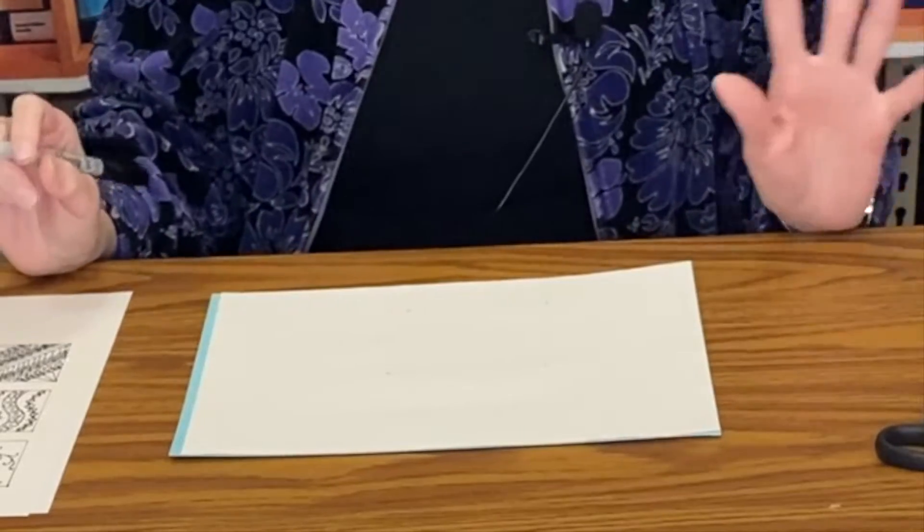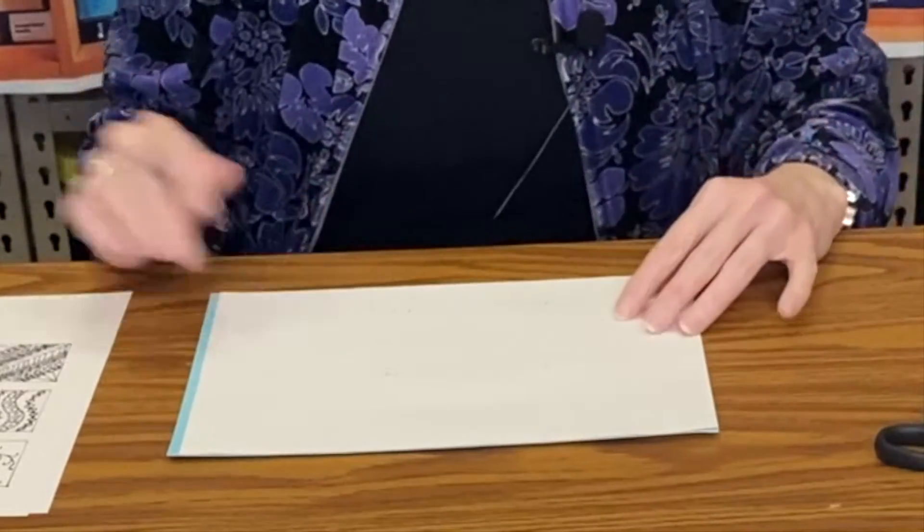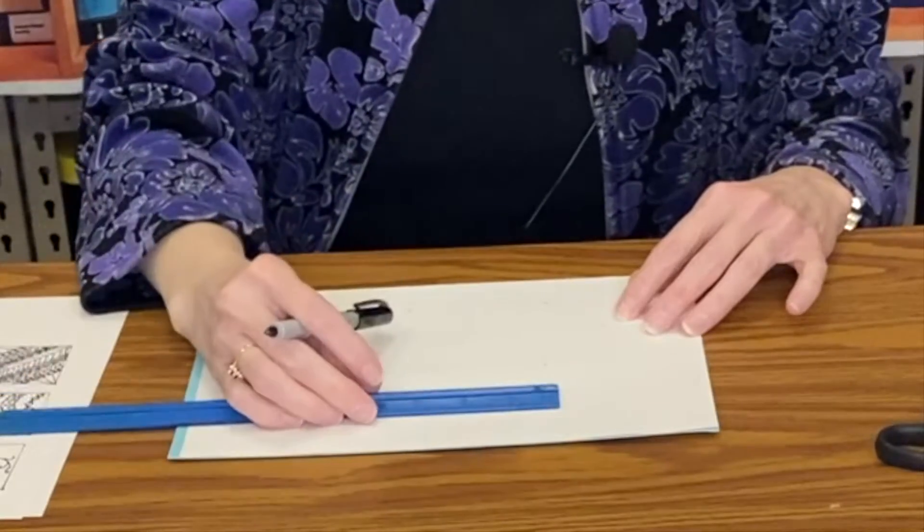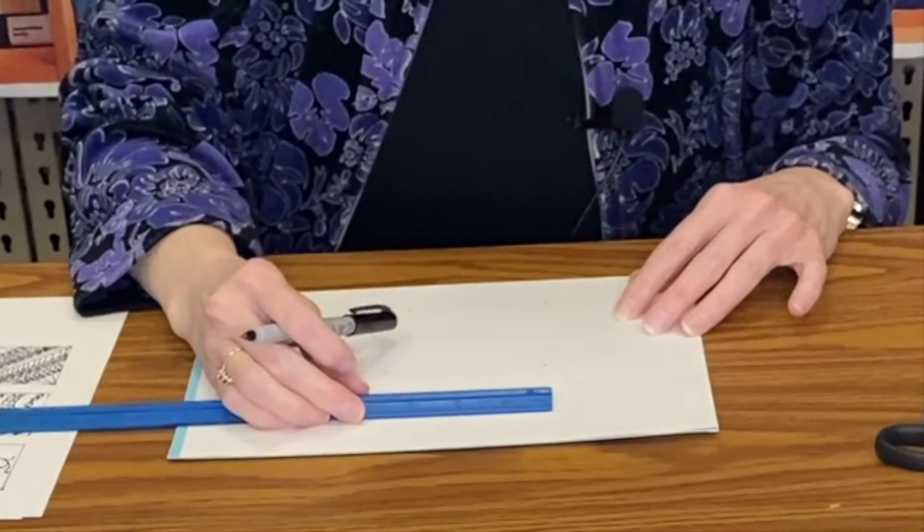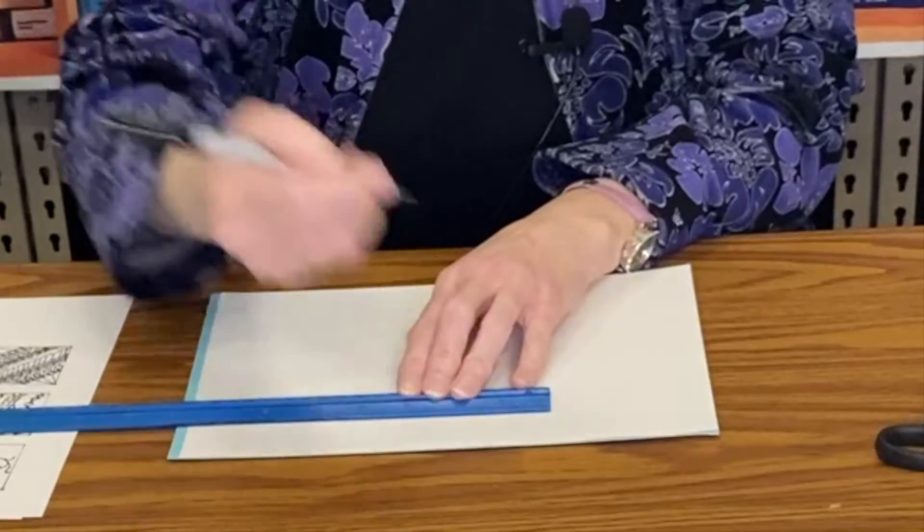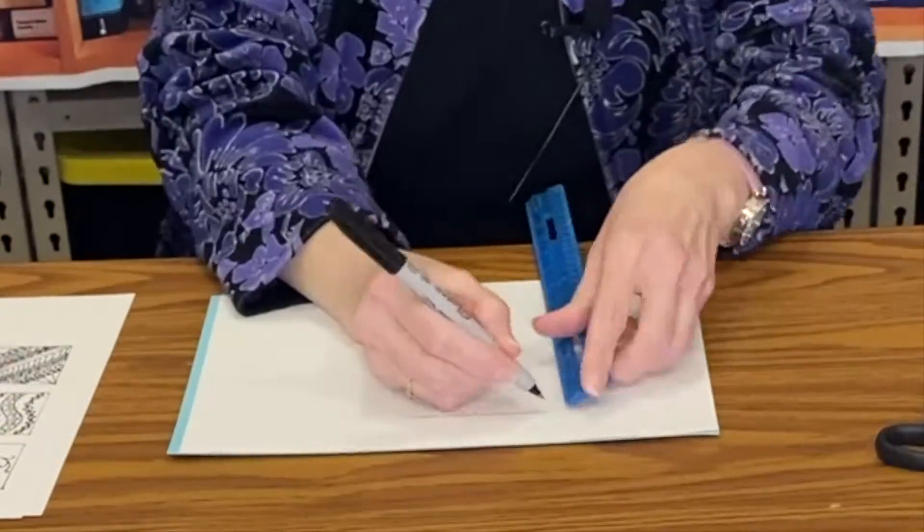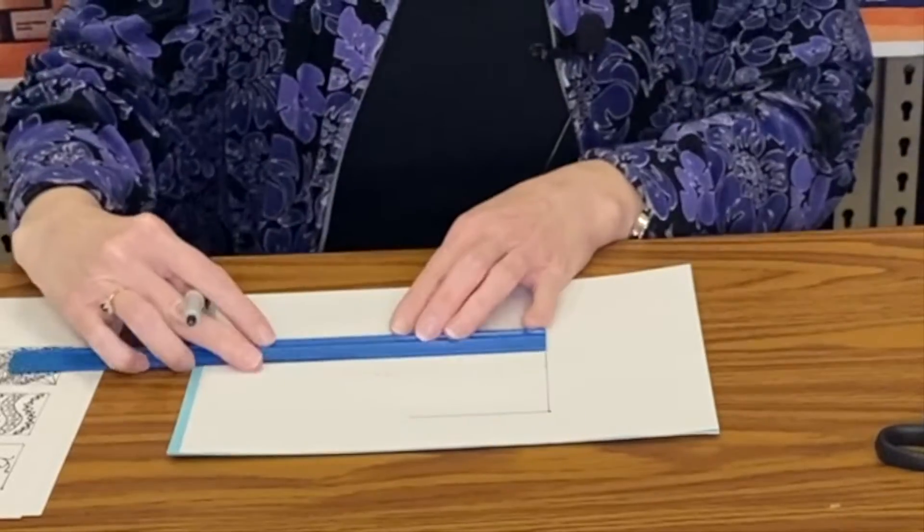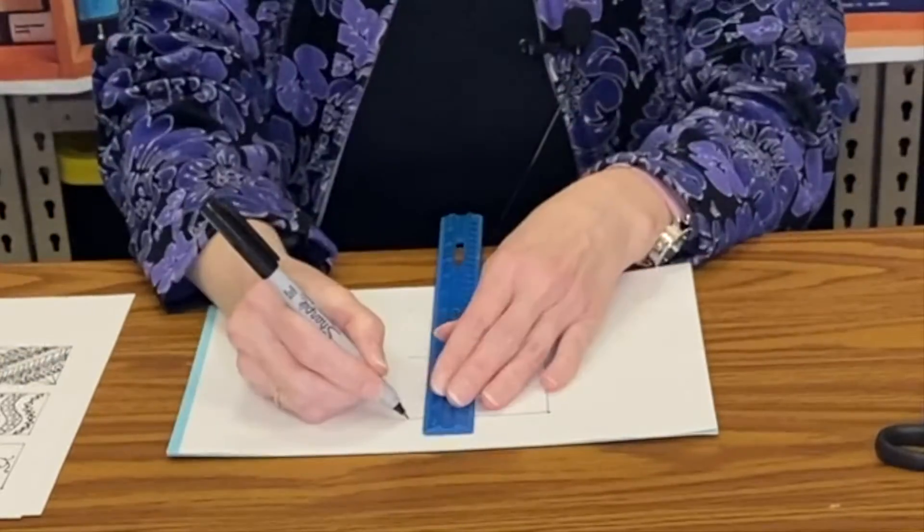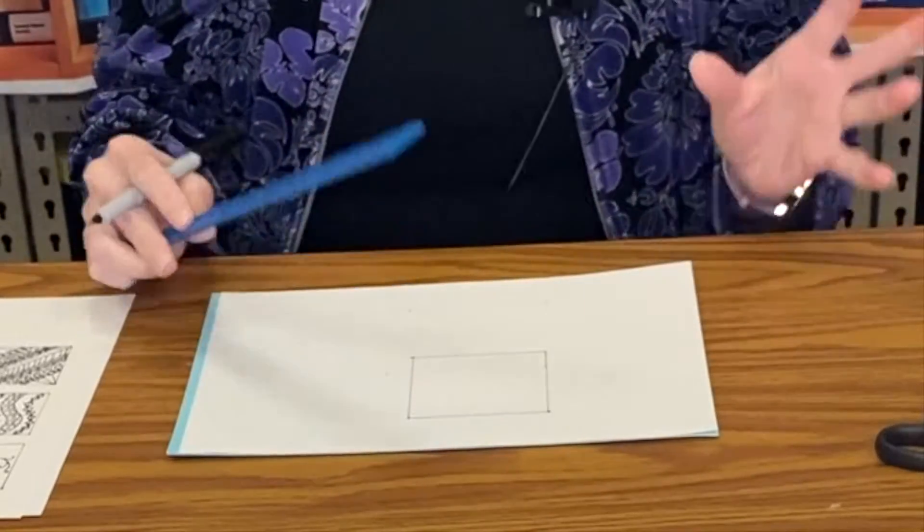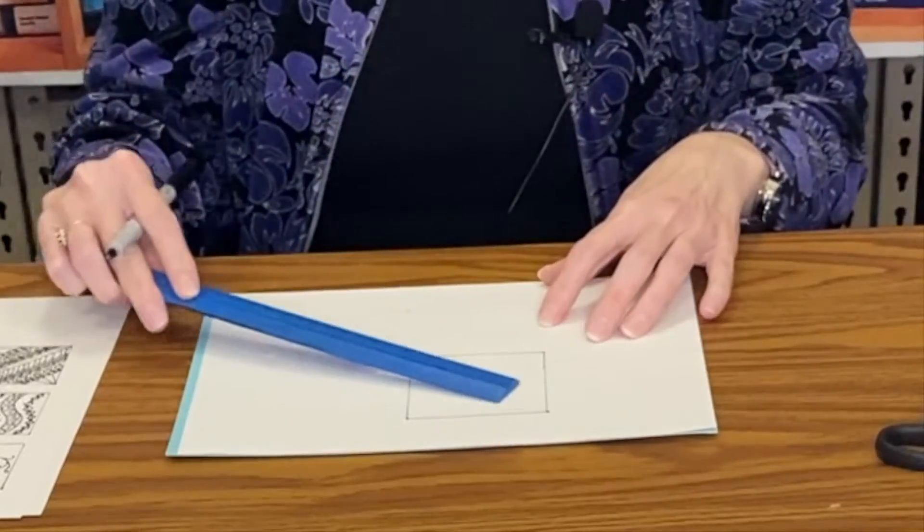All right, to get started we're going to create a framework for our patterns, and so I'm going to make a three by three inch square. And for this project what I'm going to do is create sections within the square, and for this example I'm going to make straight lines.